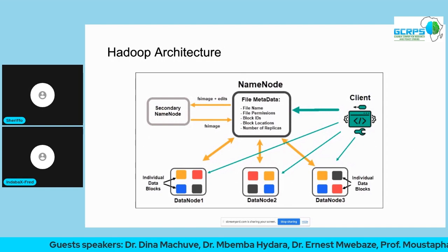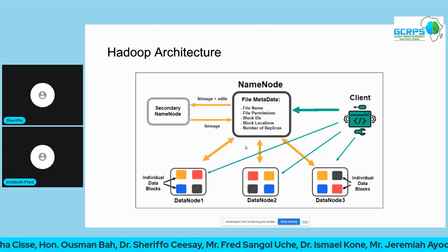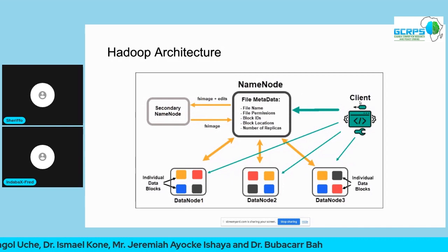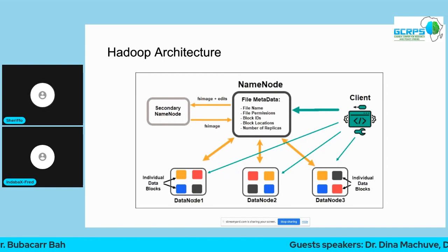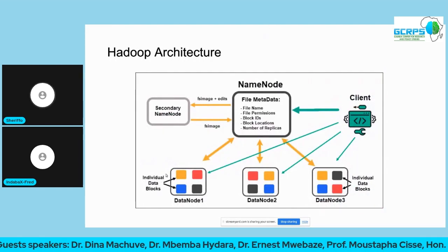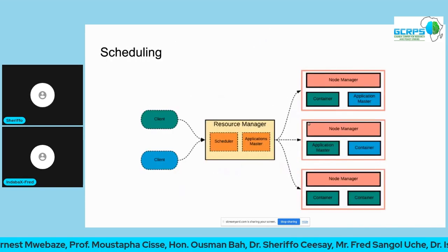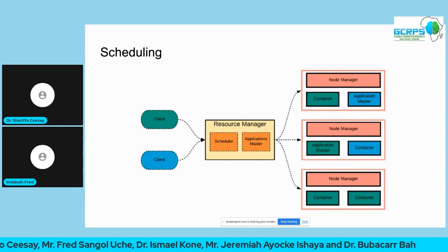The name node acts like a dictionary keeping track of which data blocks are stored on which node. A secondary name node exists in case the primary name node goes down. A client on the left interacts with this system to put data in or pull data out of the distributed file system. A scheduler sits in between to decide which node to place data on, checking available space.